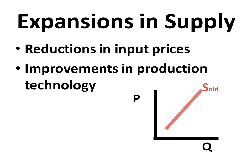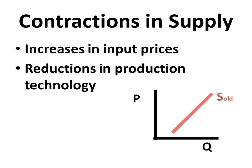We also know about expansions in supply that can come from reductions in input prices or improvements in production technology — these shift the supply curve to the right. We also have the opposite: contractions in supply that could come from increases in input prices or reductions in production technology, which shift the supply curve back to the left.